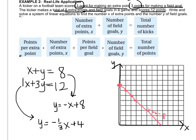I'll put a dot at 4, and go down 1, three to the right, and connect those. x plus 3y equals 12.